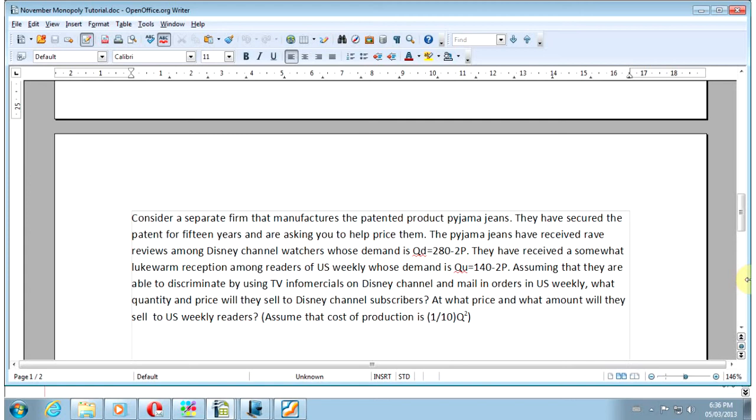They have a patent for 15 years, so they're a monopoly, and they're asking you to help price them. They've received rave reviews among Disney Channel watchers whose demand is Q_D equals 280 minus 2P. And they've received a somewhat lukewarm reception among readers of Us Weekly whose demand is Q_U equals 140 minus 2P. So already you've got the market segmented into Disney Channel watchers and Us Weekly readers.